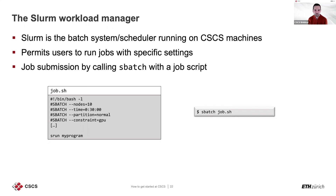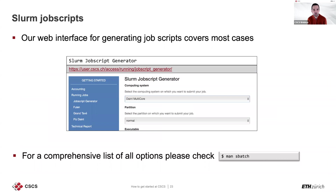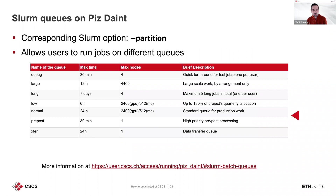Submit your job with 'sbatch job.sh' to run on a compute node. If you want a template for your SLURM script, use the 'lern job script generator' available on the user portal, which provides options you can set online. You also have the manual page of sbatch to check possible options. The SLURM queues on Piz Daint are different and set with the '--partition' option: debug queue (max 30 minutes, one job per user for quick testing), and large queue for large-scale jobs by arrangement only.